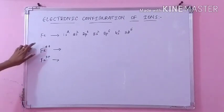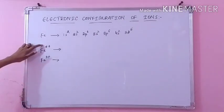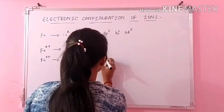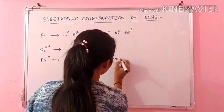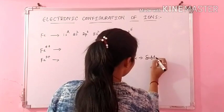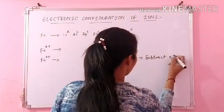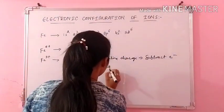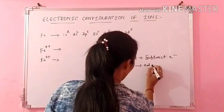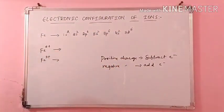So what does this positive charge indicate? Just to remember, if positive charge is there, then we have to subtract the electrons. And if negative charge is there, then you have to add the electrons. This much thing you should be knowing. If you know this, then you can write the configuration of ions.